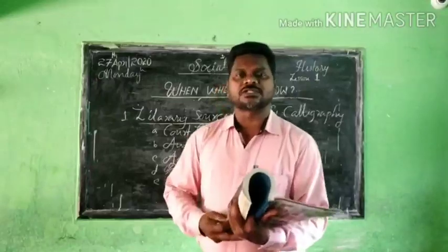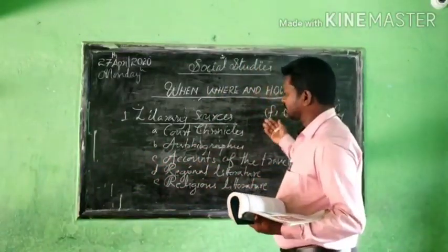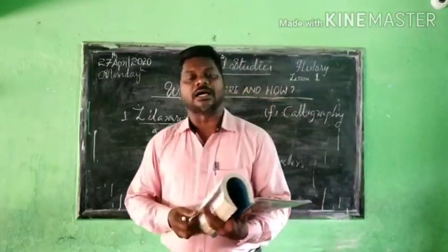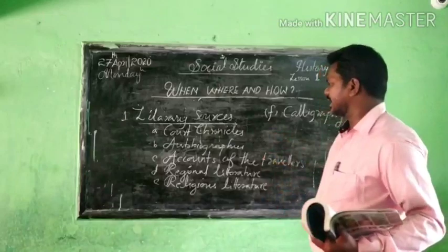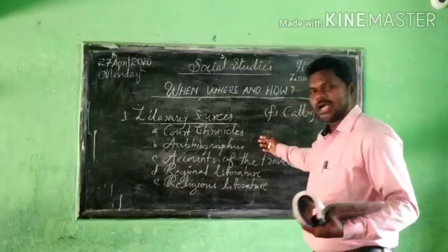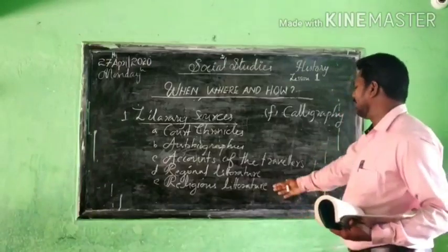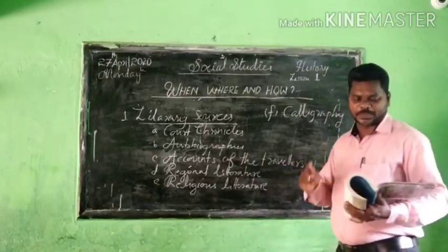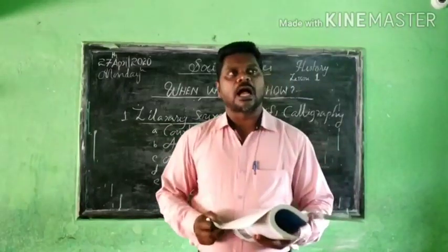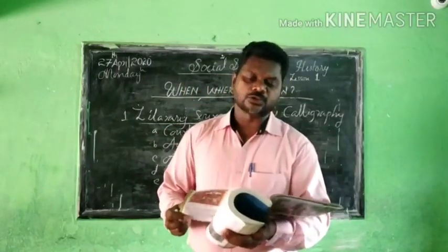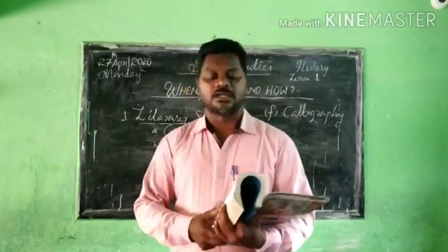Now we go to the next sources, called archaeological sources. I already informed you that we are going to learn about two types of sources: first, literary sources, and second, archaeological sources. The literary sources — court chronicles, autobiographies, accounts of travelers, regional literature, religious literature, and calligraphy — I have now explained. Now we move to the second part: archaeological sources.